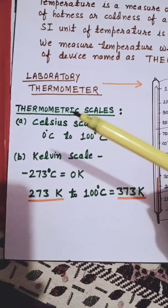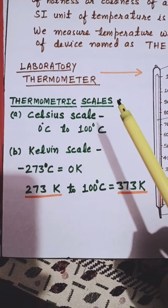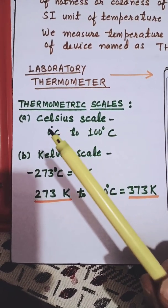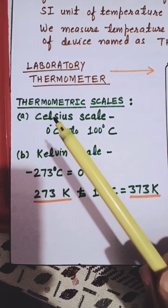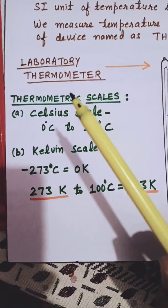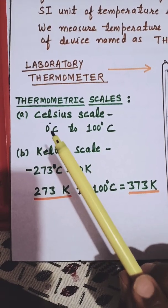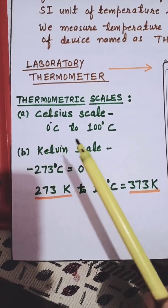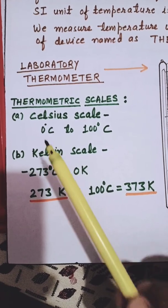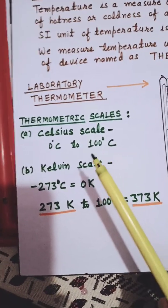Next is the Thermometric Scale. As given in the book, the thermometric scale is of two types — the Celsius scale and the Kelvin scale. In the case of the Celsius scale, temperature is measured from 0 degrees Celsius to 100 degrees Celsius. 0 degrees is the lowest point and 100 degrees Celsius is the highest point.